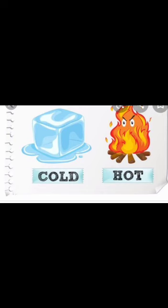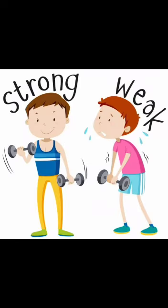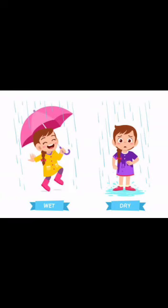In your book, some pictures are given. Look at some of these opposite words. First one: cold, hot. Second one: weak, strong. Third one: dry, wet. Fourth one: slow, fast.